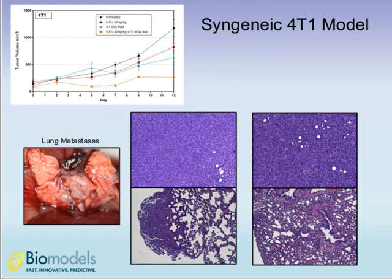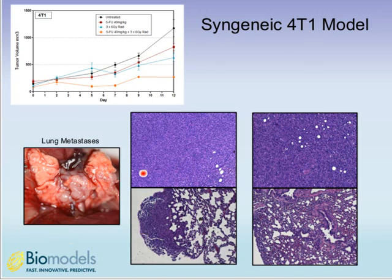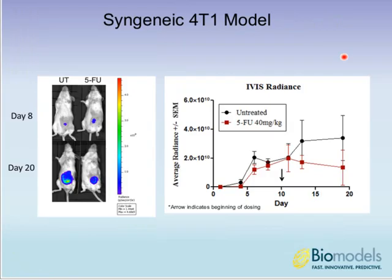We ran a syngeneic 4T1 model. The 4T1 cells are derived from a spontaneous breast cancer in BALB/c mice, and this cell line produces tumors that represent human disease quite well. We used a combination of chemotherapy and fractions of radiation mimicking what a breast cancer patient might receive. This model is quite rapid — data shown here are only 12 days after inoculation, and the full study spans about two to three weeks. The model is also highly metastatic, as shown by lung metastases that are histologically comparable to the primary tumor.